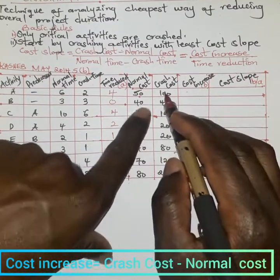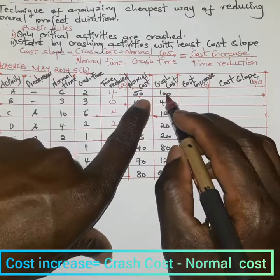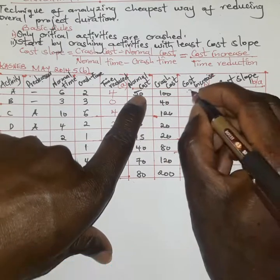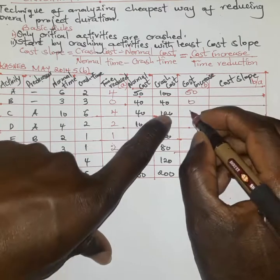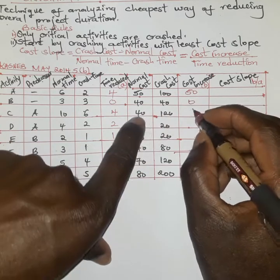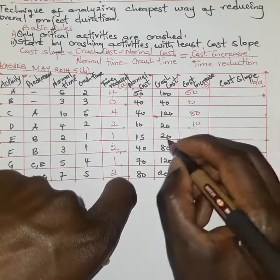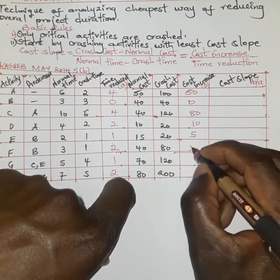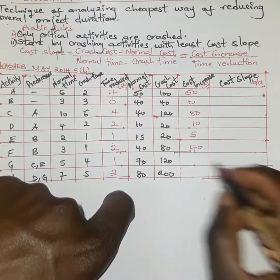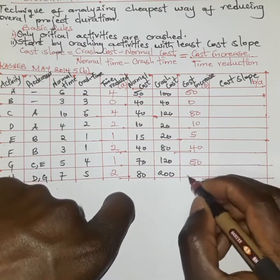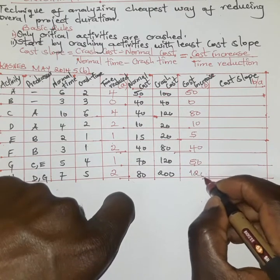For activity A, the cost increase is 100 minus 50, which is 50. Then we have: 40 minus 40 is 0, 120 minus 40 is 80, then 10, 5, 40, 50, and finally 120.